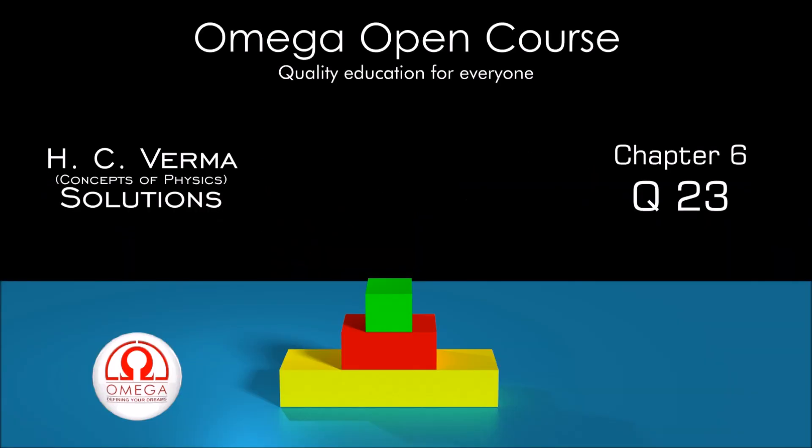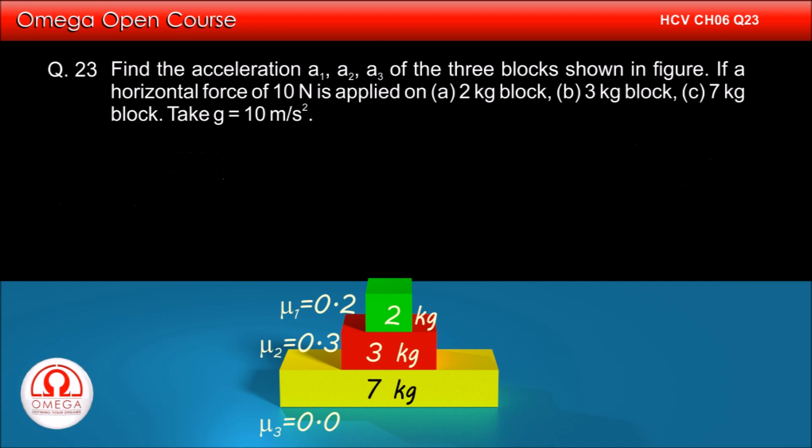H.C. Varma Chapter 6, Question No. 23: Find the acceleration A1, A2, A3 of the 3 blocks shown if a horizontal force of 10N is applied on A — 2kg block B, 3kg block C, 7kg block.